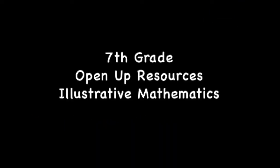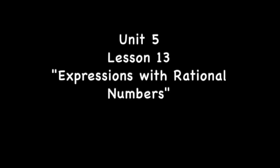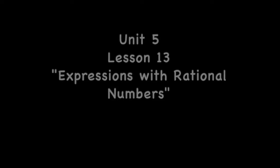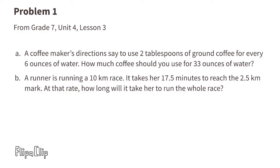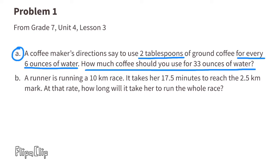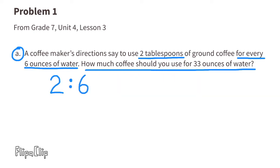7th grade Open Up Resources Illustrative Mathematics Unit 5 Lesson 13, expressions with rational numbers. Problem number one from 7th grade Unit 4 Lesson 3a: a coffee maker's directions say to use two tablespoons of ground coffee for every six ounces of water. How much coffee should you use for 33 ounces of water?